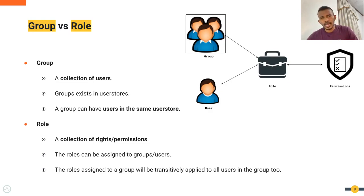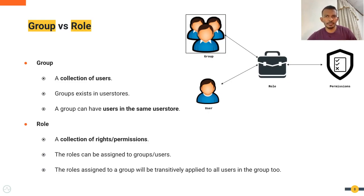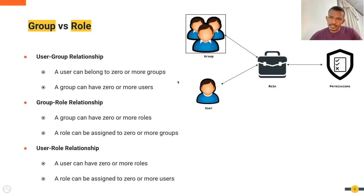A group is a collection of users; a role is a collection of permissions. A role can be assigned to groups or users, and the roles assigned to a group will be transitively applied to all users in that group in WSO2 Identity Server 5.11 and 6.0. A group can only have users from a particular user store, because groups exist in user stores. Therefore, a user in user store B cannot be in a group for users in user store A.